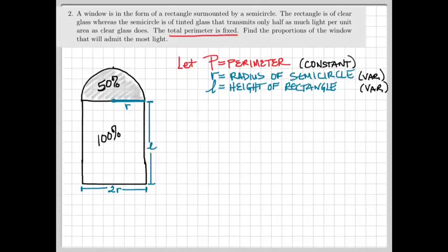We can let P be the perimeter of the entire window. P is a constant. If working with P bothers you, pick a number, like 1 or 10, and substitute that in for P. But I'm going to use it in general as a constant P. Let R be the radius of the semicircle. That means that the width of our rectangle is 2R. Let L be the height of the rectangle.